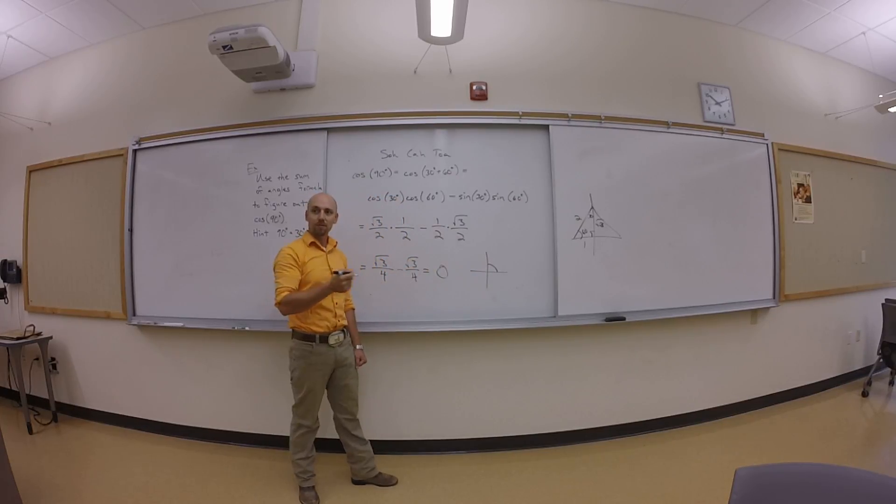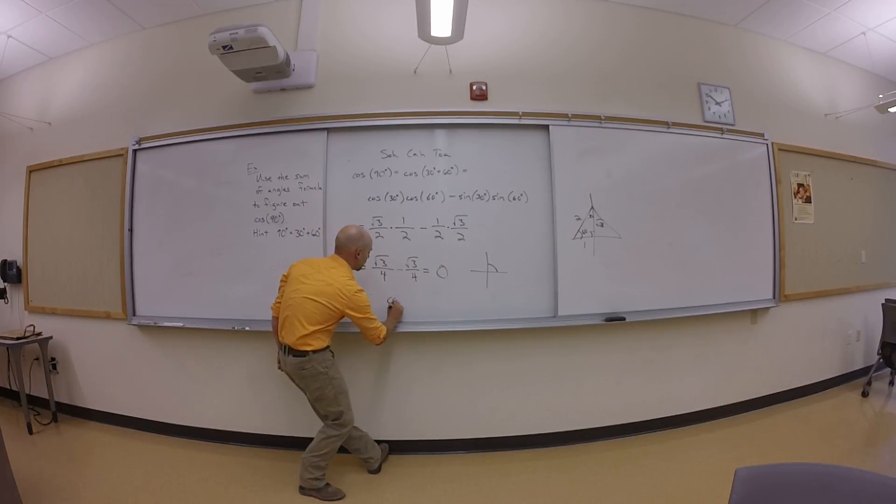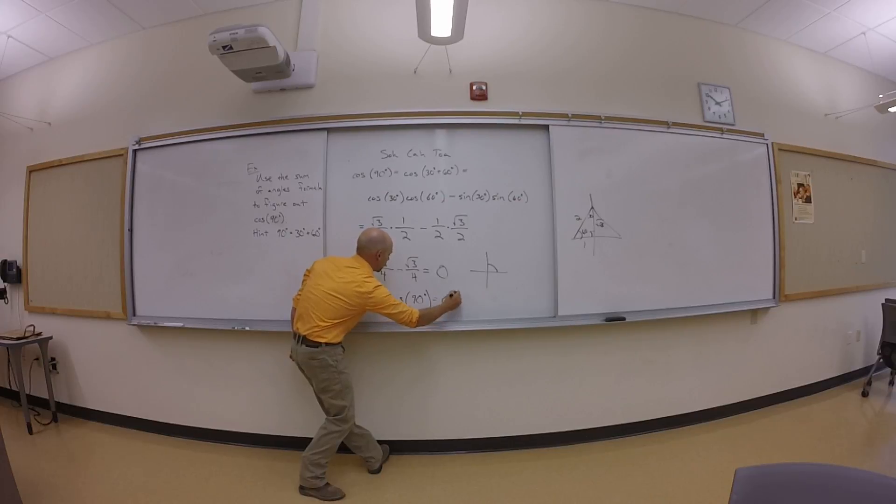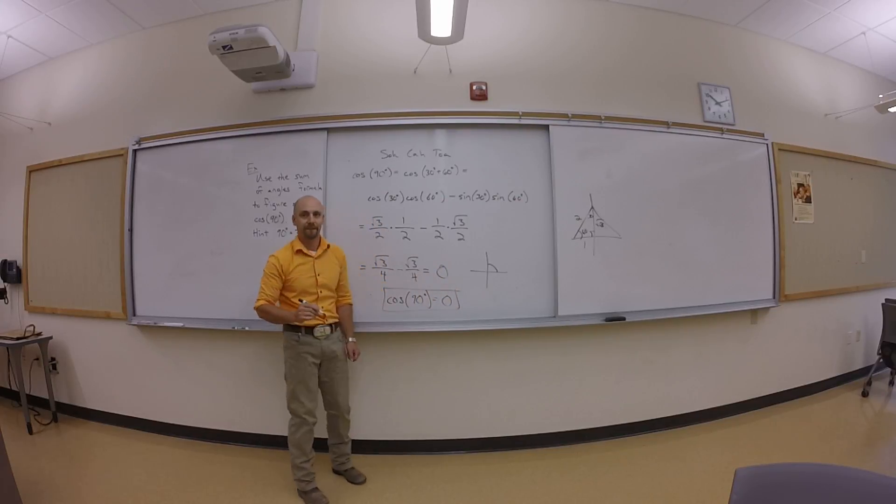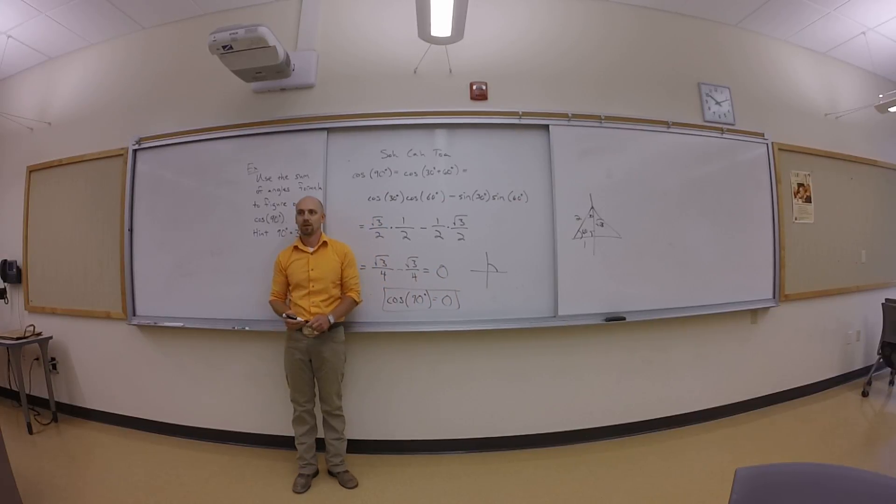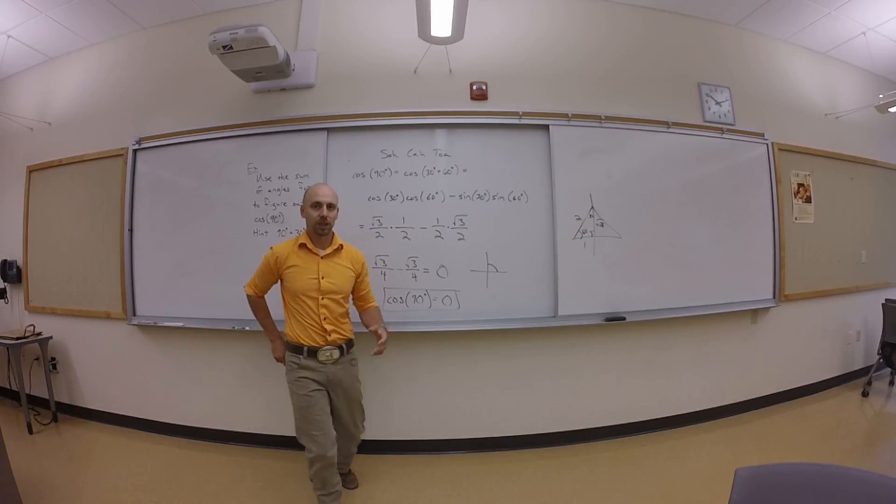If I wanted to label this, I would label this as cosine of 90 degrees is zero. You guys, if you're not done with the other one, try that for a second.